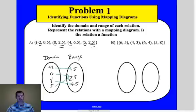So again, negative 2 goes to here, only one, doesn't go anywhere else. 0 goes to 2.5, it doesn't go anywhere else. 4 goes to 6.5, it doesn't go anywhere else. 5 goes to 2.5, it doesn't go anywhere else. So this is a function.